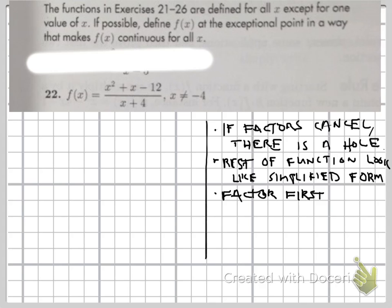And the reason for that is if we factor the top, we can break it up into x plus 4 times x minus 3 and that's over x plus 4.